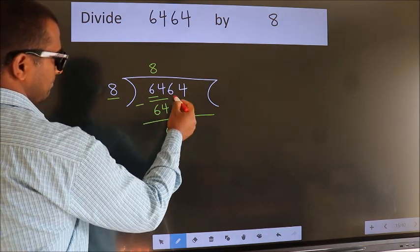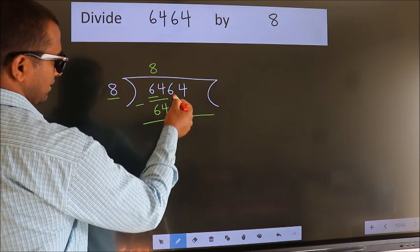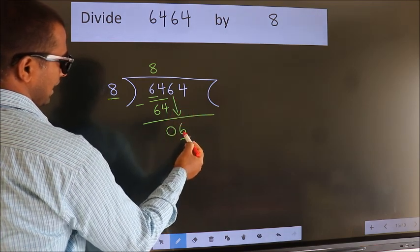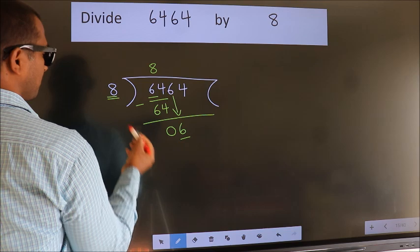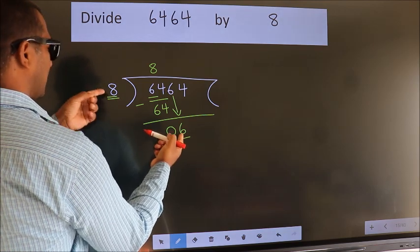After this, bring down the beside number. So, 6 down. Here we have 6, here 8. 6 is smaller than 8.